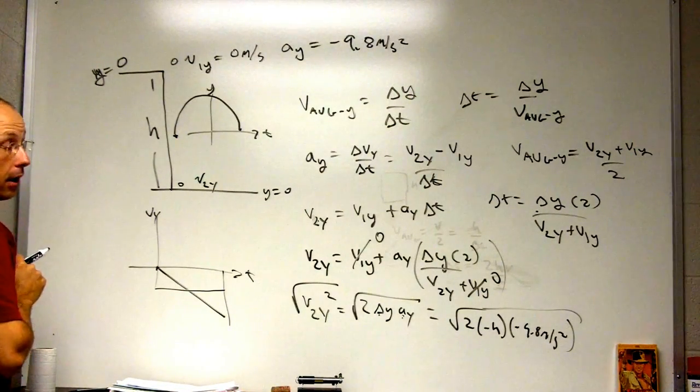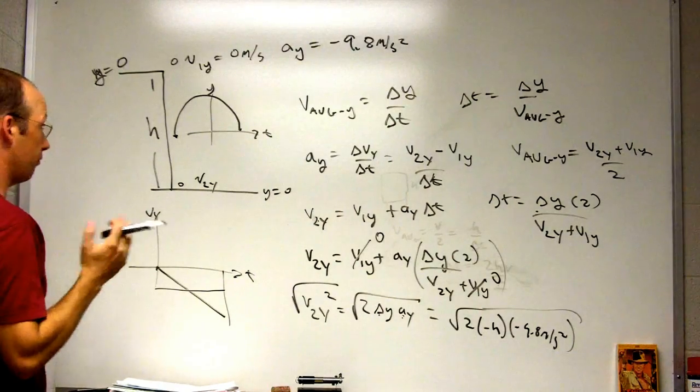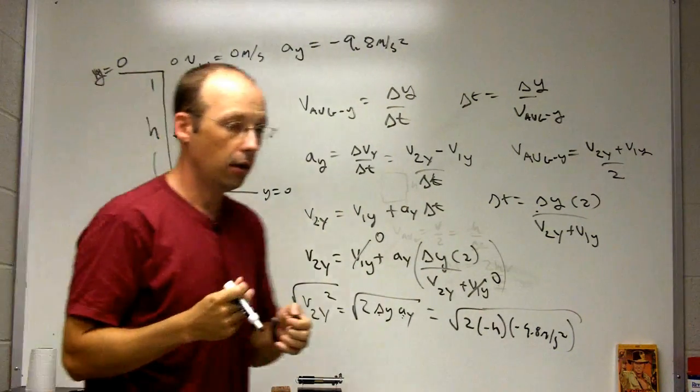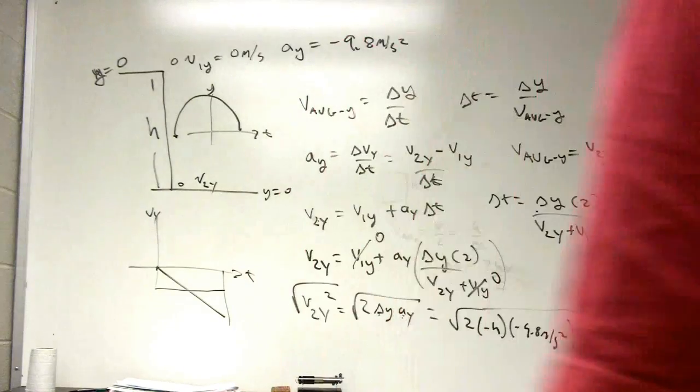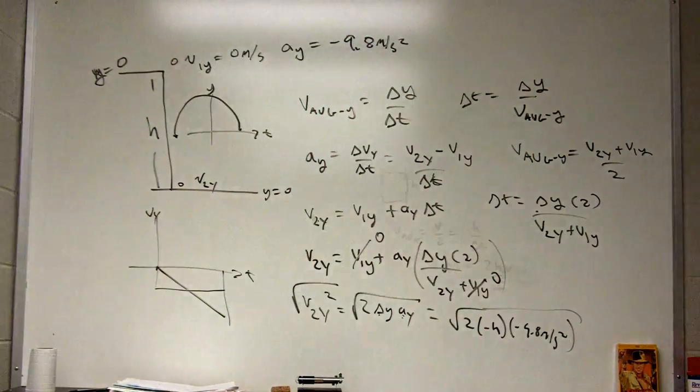But at that height, there's also a velocity over here that's negative. So it gives you two values, one's a negative time. Okay, I hope that didn't take more than 11 minutes. Eight? Awesome!